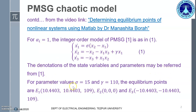Now, if we replace the parameter values sigma by 15 and gamma equal to 110, the equilibrium points that are calculated are E1, E2, and E3.